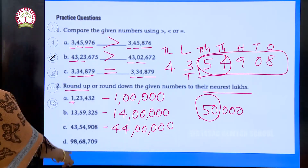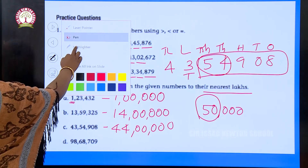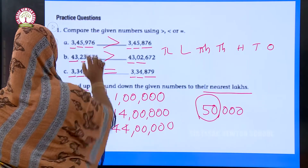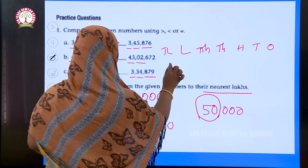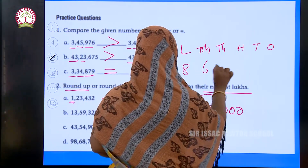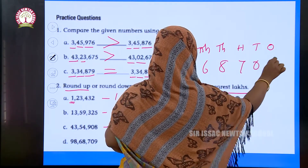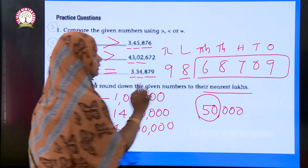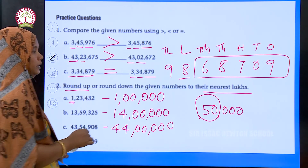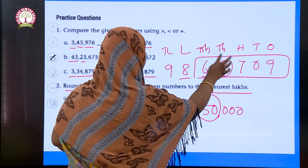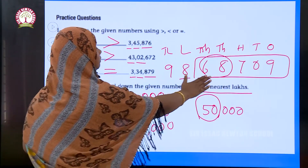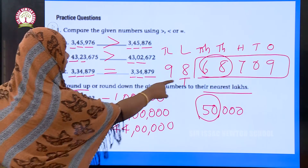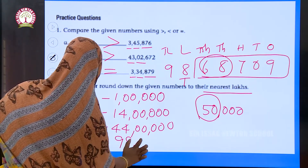Next: 98,068,709 to the nearest lakh. We look at 68,709. Since 68 thousand is greater than 50,000, we round up and add 1 to the lakhs place. Adding 1 to 8 gives 9, so the answer is 99 lakhs.